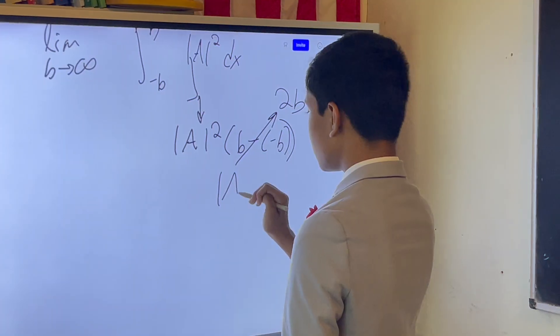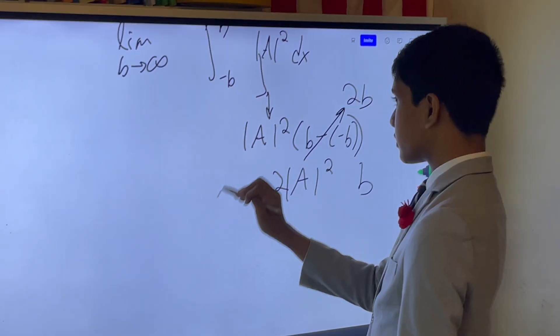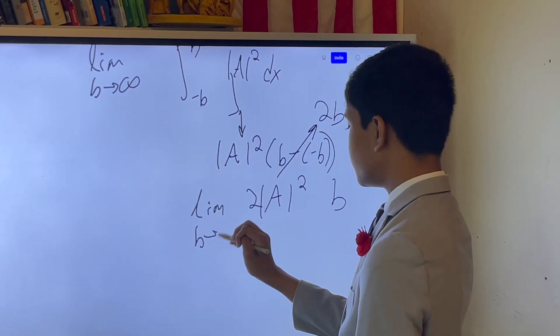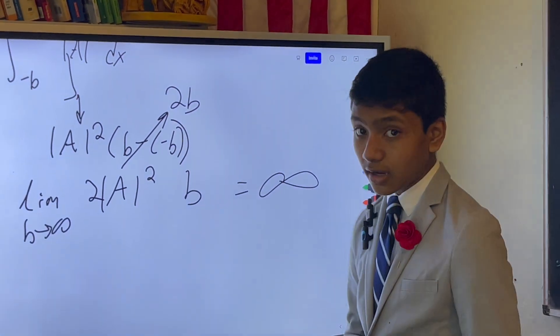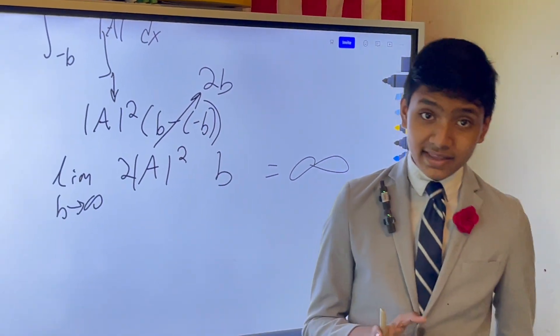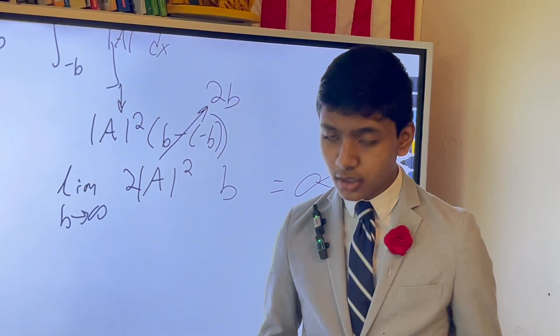And, the limit of 2a squared b, as b approaches infinity, diverges, which means that a free particle doesn't mathematically exist in quantum mechanics. Nothing is free.